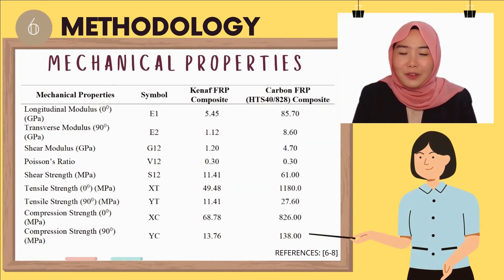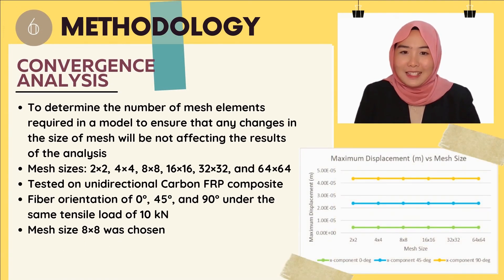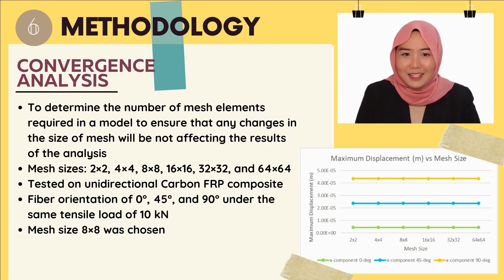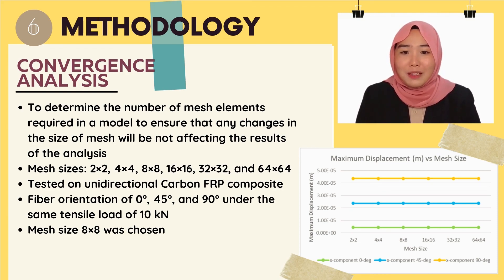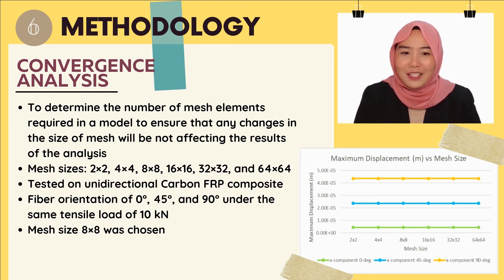Convergence analysis is done to determine the number of mesh elements required in a model to ensure that any changes in the size of the mesh will not affect the results of the analysis. In this convergence analysis, a few mesh sizes were tested on unidirectional carbon fiber reinforced polymer composite for fiber orientations of 0 degree, 45 degree, and 90 degree under the same tensile load of 10 kN. From the figure shown, the value for maximum displacement remains the same as the mesh size increases. Thus, a mesh size of 8×8 was chosen to get accurate results at fast computation of data.